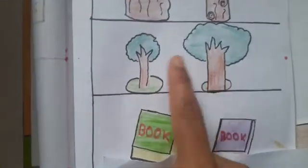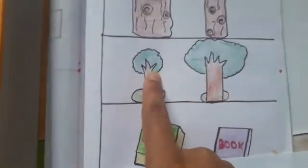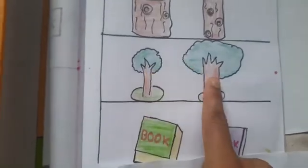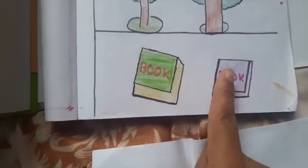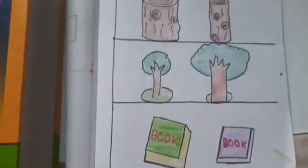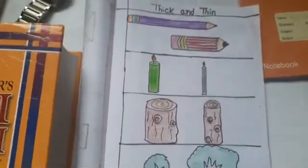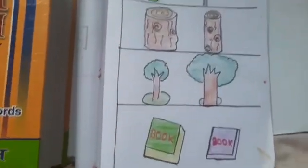Next, these are trees. This is, see this one is thin and this one is thick. Next, I have drawn here two books. This book is thick and this book is thin. Okay children, understood the difference between thick and thin? Very good.